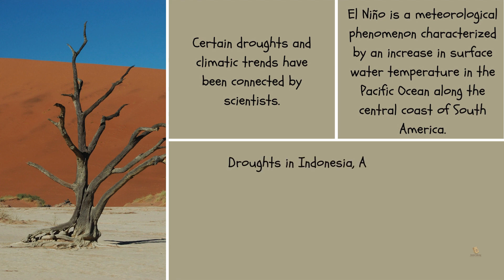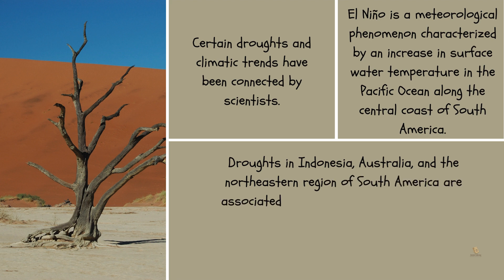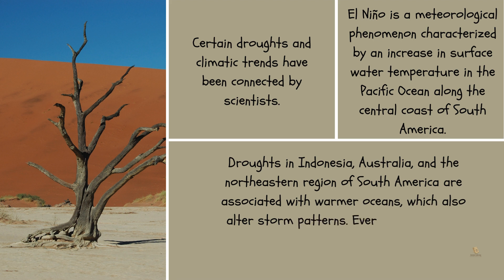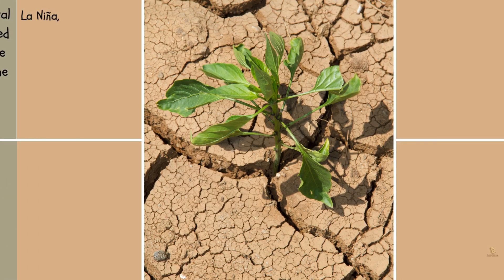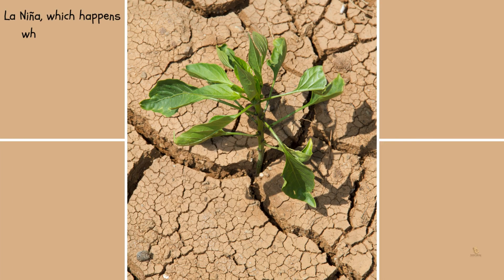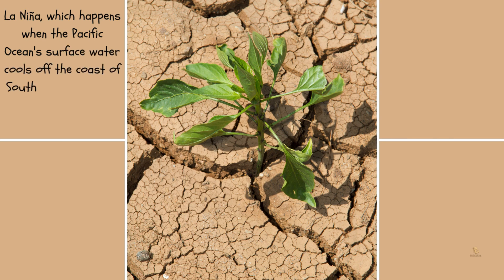Droughts in Indonesia, Australia, and the northeastern region of South America are associated with warmer oceans, which also alter storm patterns. Every two to seven years, El Niño arrives, leaving climate experts wondering. La Niña, which happens when the Pacific Ocean's surface water cools off the coast of South America, is the exact opposite of El Niño.